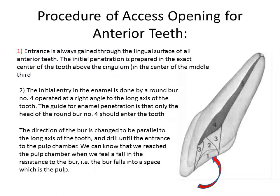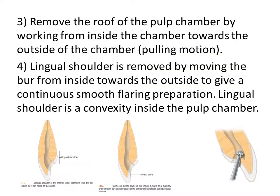Once you feel the drop, you know you are in the pulp. Increase the size of your cavity and diverge it, then change the direction of cutting to be parallel with the long axis of the tooth. Otherwise, if you continue with the first direction you started with, you will end up perforating the labial surface. Remove the roof of the pulp chamber by working from inside the pulp toward the outside in a pulling motion, clearing all present shoulders.